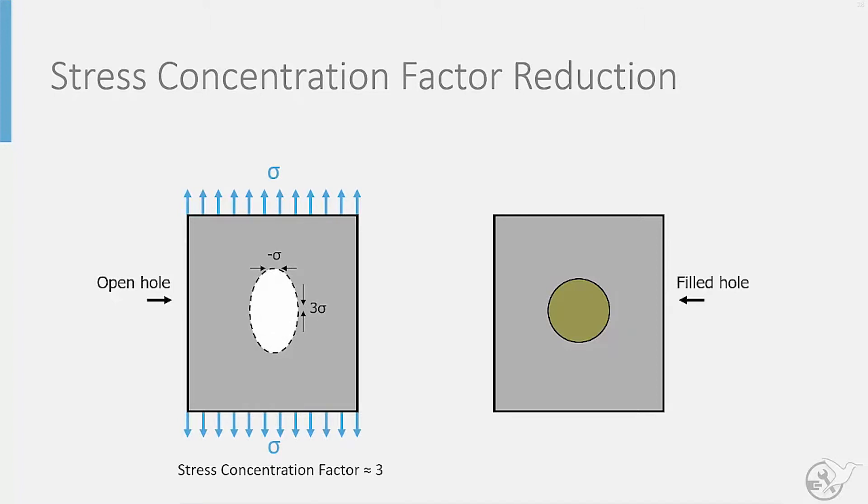Stretching of the material under this load also causes it to deform into an oval shape. The situation, however, changes if that hole is filled. The ovalization that previously occurred is restricted by the rivet, resulting in contact forces between the rivet and the hole surface, which redistribute load. This causes a reduction in the stress concentration factor to approximately 2 for the left and right-hand sides of the hole.